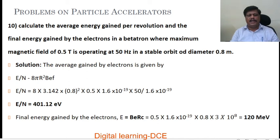The final energy gained by the electrons is E equals B e r c. So B value is 0.5, charge is 1.6 into 10 power minus 19, radius is 0.4 m, and velocity of light. Substituting these values, we get the final energy as 120 MeV.